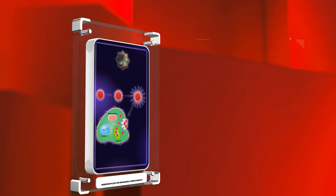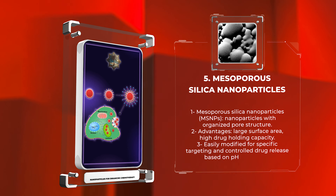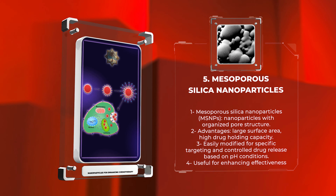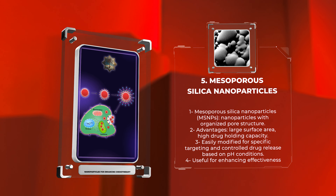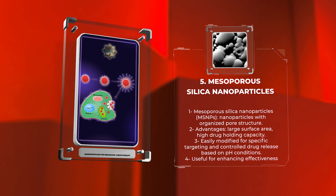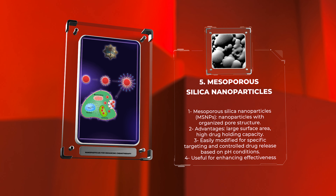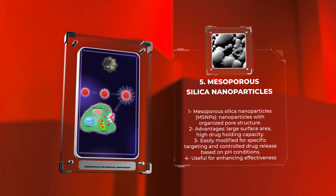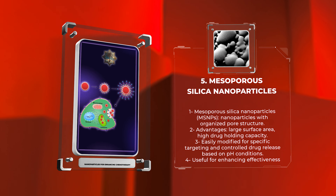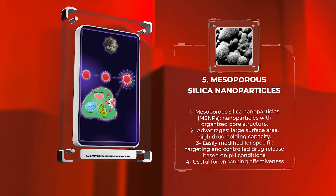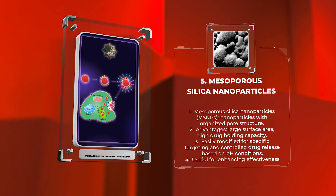Mesoporous silica nanoparticles (MSNPs) are a type of nanoparticles that have a very organized pore structure. They have a large surface area and can hold a large amount of drugs. MSNPs can be easily modified to specifically target certain cells and release the drugs in a controlled manner depending on the pH conditions in the body. This makes them very useful in enhancing the effectiveness of chemotherapy drugs.